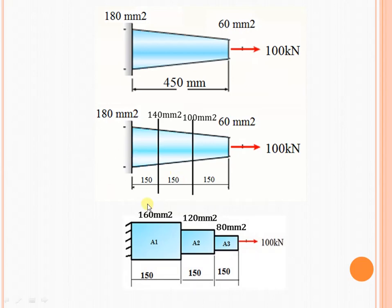We will get the area for these three elements. How to convert this taper bar into a step bar having uniform cross sectional area — you need to watch my previous video. Then you can get the idea how to convert this taper bar into a step bar. You can find the link in the description.